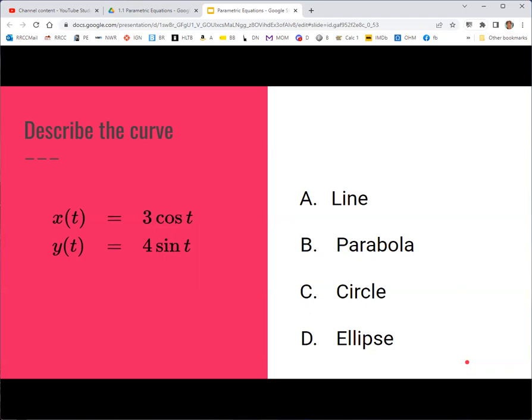And for this one, you should get that it's an ellipse. We have cosine with x and sine with y, but the numbers in front, the coefficients, are different. So you'll have an ellipse instead of a circle.